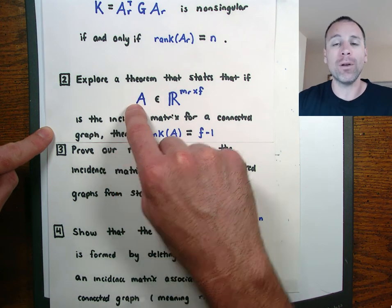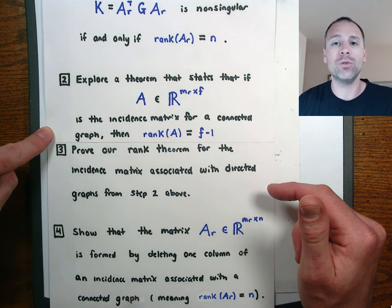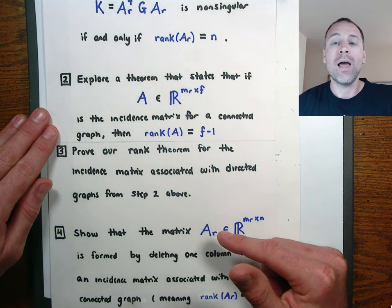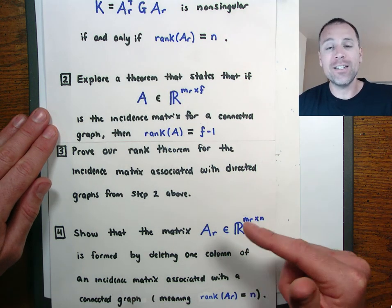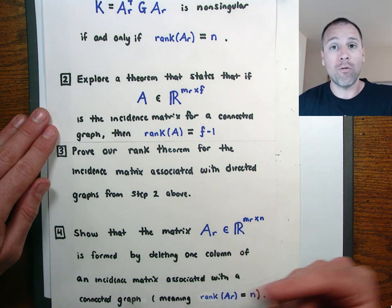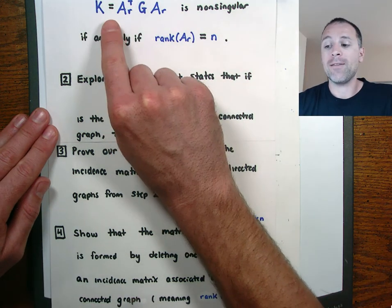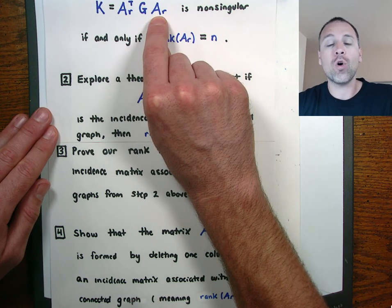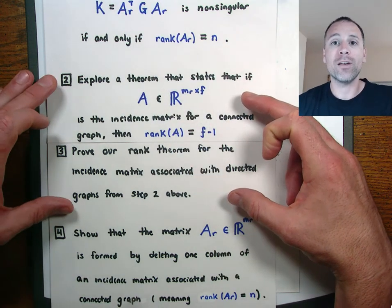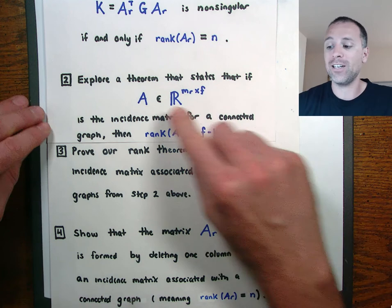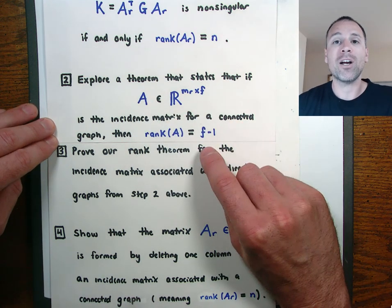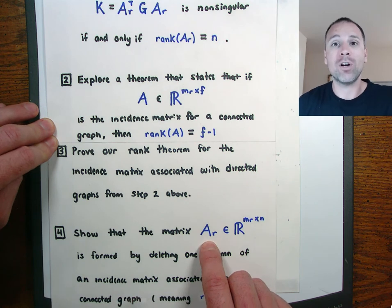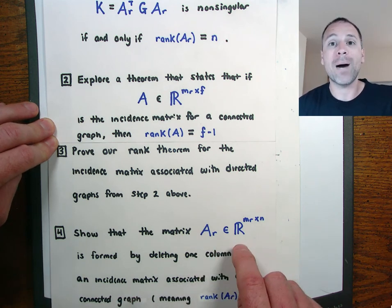In the third extension video, we'll offer a rigorous proof of this graph theory theorem — that the number of linearly independent columns of an incidence matrix for a connected graph is one minus the total number of columns. In the fourth extension video, we'll show that the matrix A sub R actually comes from deleting one column of the incidence matrix associated with a connected graph.